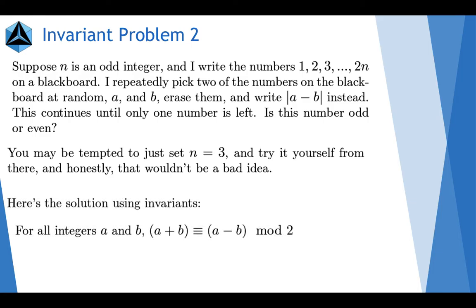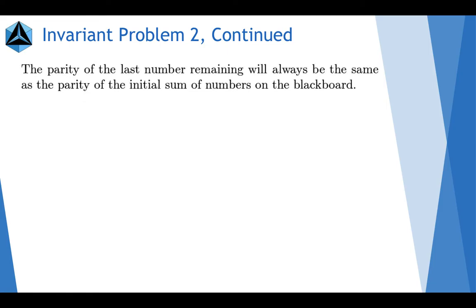For all integers A and B, A plus B is congruent to A minus B modulo 2. For example, if you take 5 and 7, 5 plus 7 is 12. 5 minus 7 is negative 2. Both of those numbers are equal to 0 modulo 2. The parity of the sum of the numbers on the blackboard is invariant.